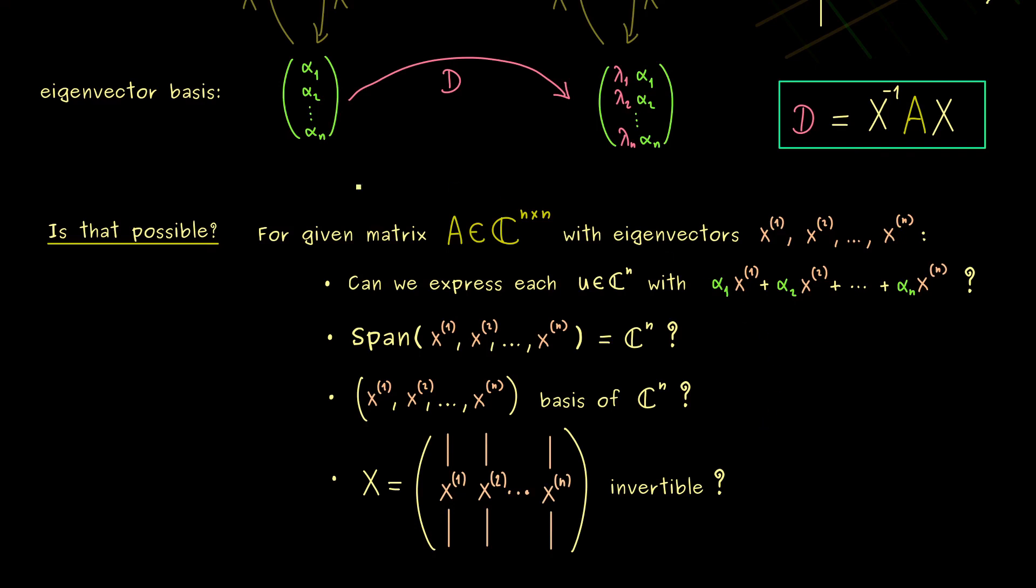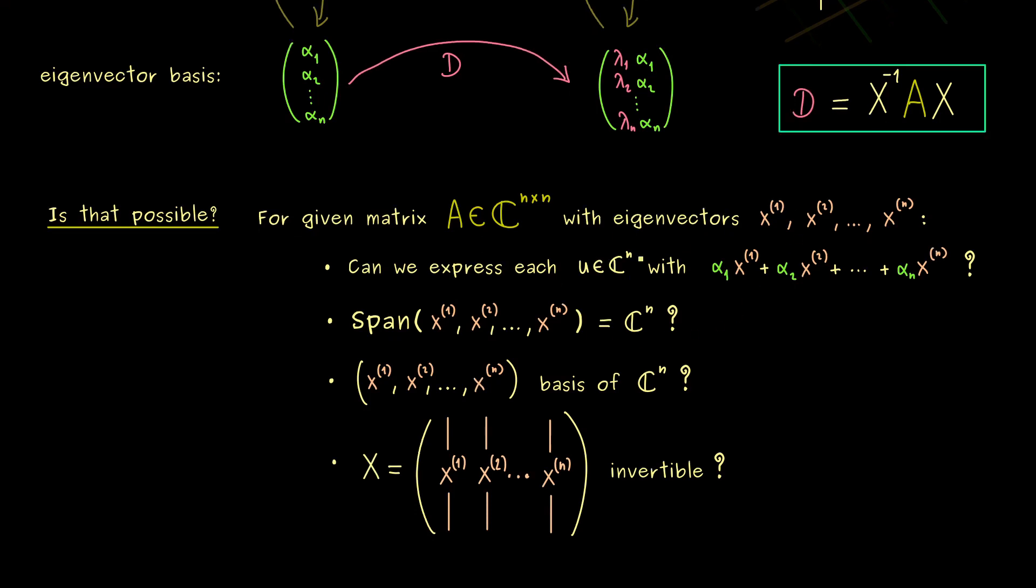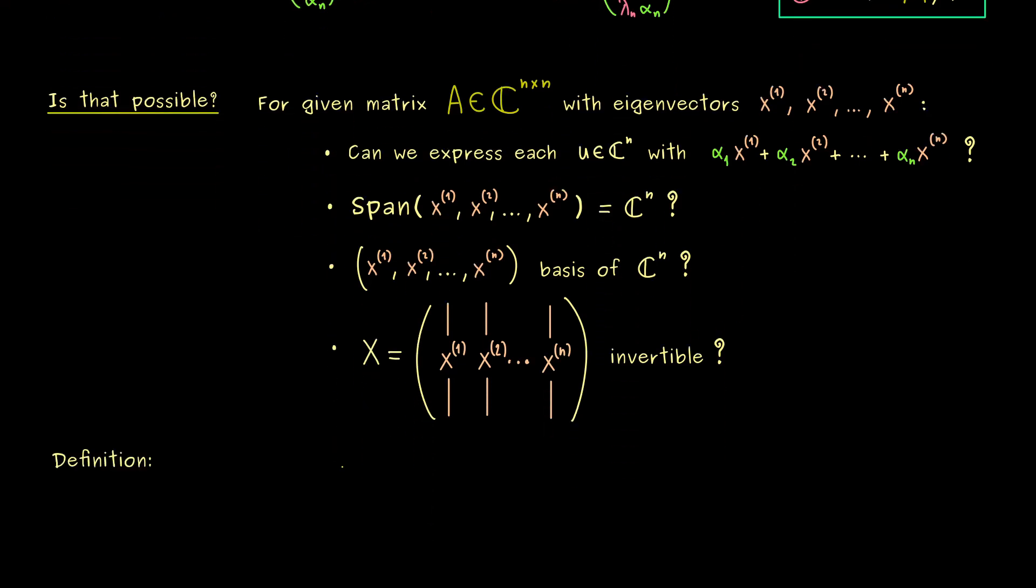In other words, now we know the conditions we have to give to the matrix A, such that we can do such a diagonalization. Therefore, now we are finally ready for the important definition of this video. And from the title, you already know, this is the term diagonalizable.